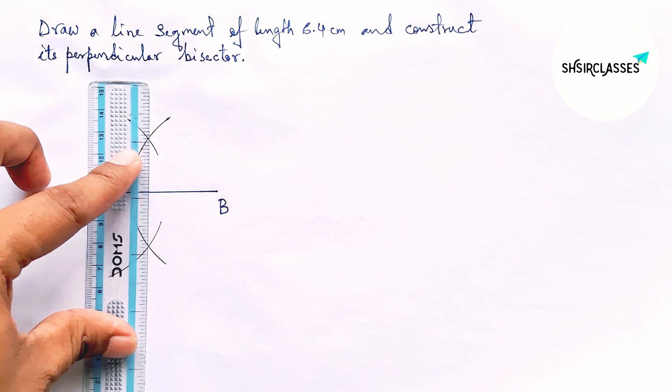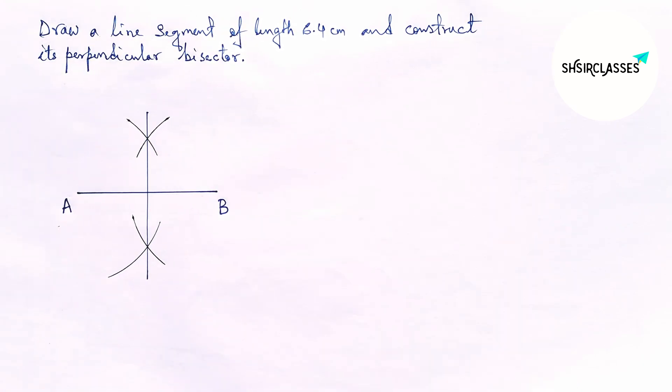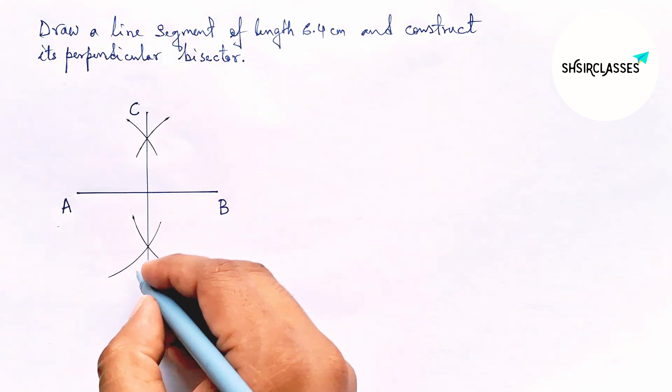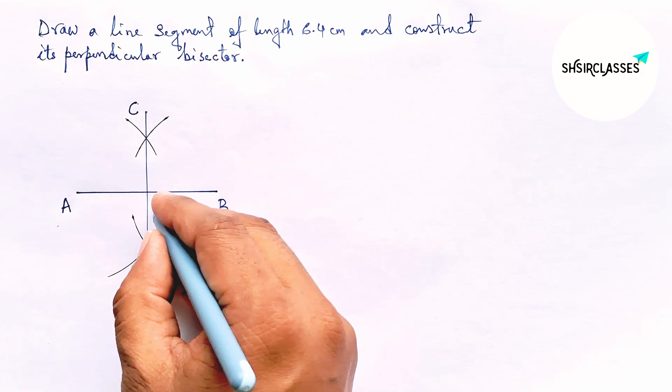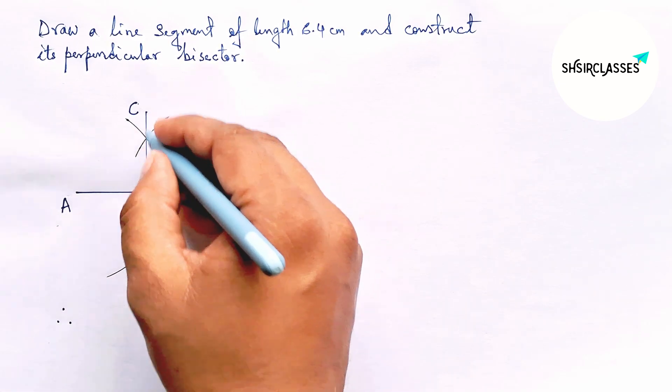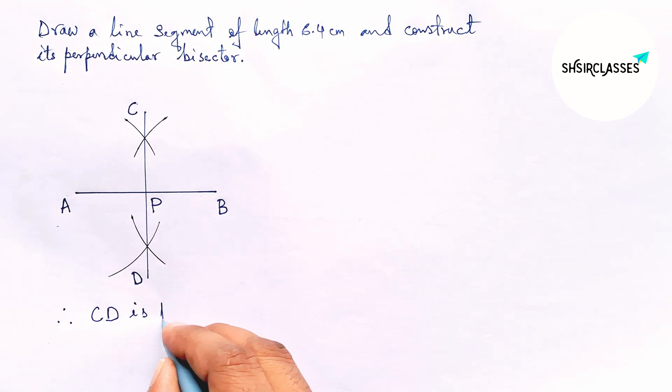Now joining this, and this is the required perpendicular bisector. So labeling here C and here D. AB and CD both meet at a point, so taking here point P. Therefore, CD is the required perpendicular bisector.